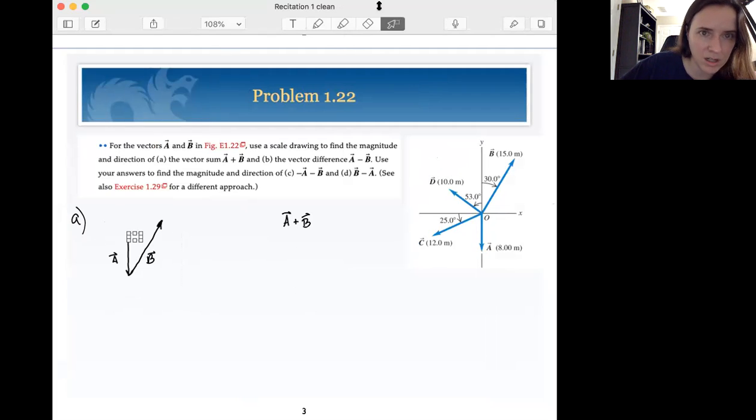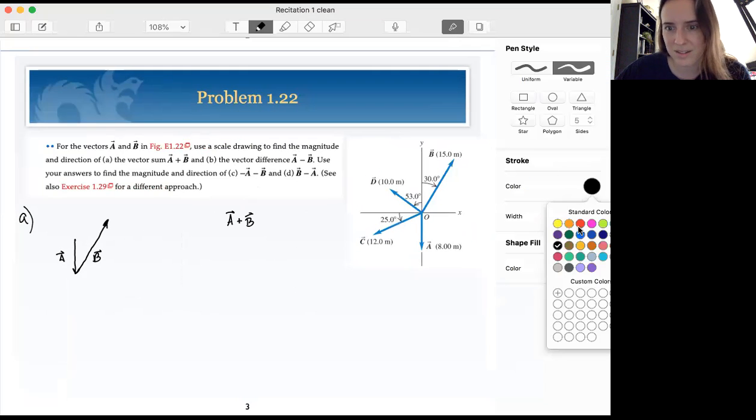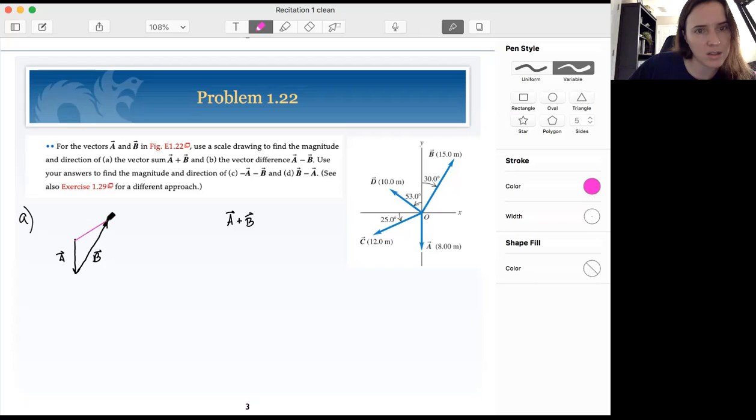Where's my colors? All right, so then our resultant is going to be from where you started. Aha, there we go. Let's change the peak. It's going to be from where we started to where we ended. Just like that. So this peak one is the vector a plus b.